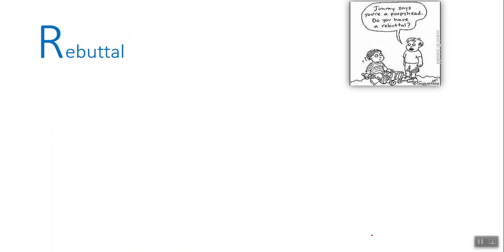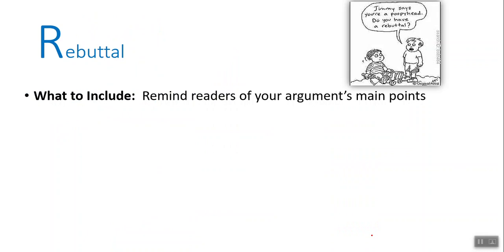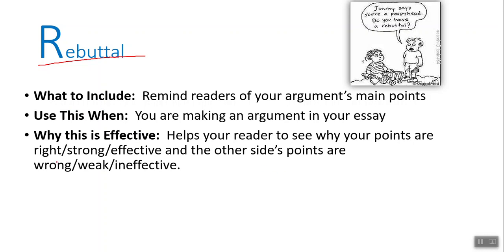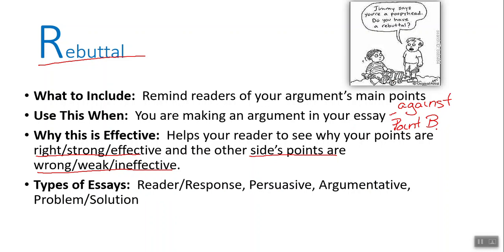The first type is a rebuttal. A rebuttal is when you argue against someone else. If you have a persuasive essay where you have a rebuttal, you can conclude with a rebuttal as well — remind your readers of your argument's main points. Use this when you are making an argument in your essay. It helps your readers see why your points are strong and effective and why the other side's points are weak and ineffective. You recap your argument's main points and show again why the other side is not correct.